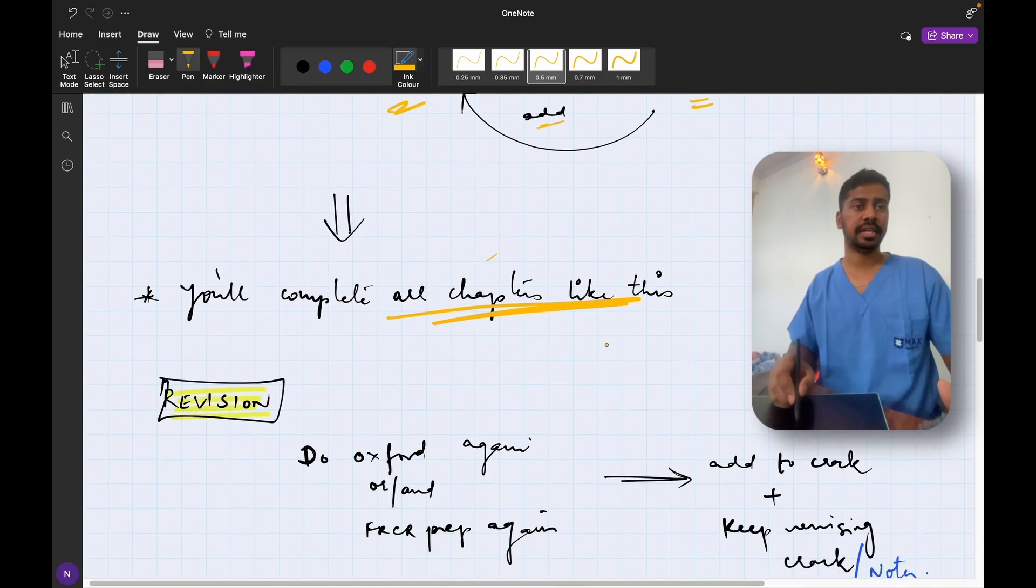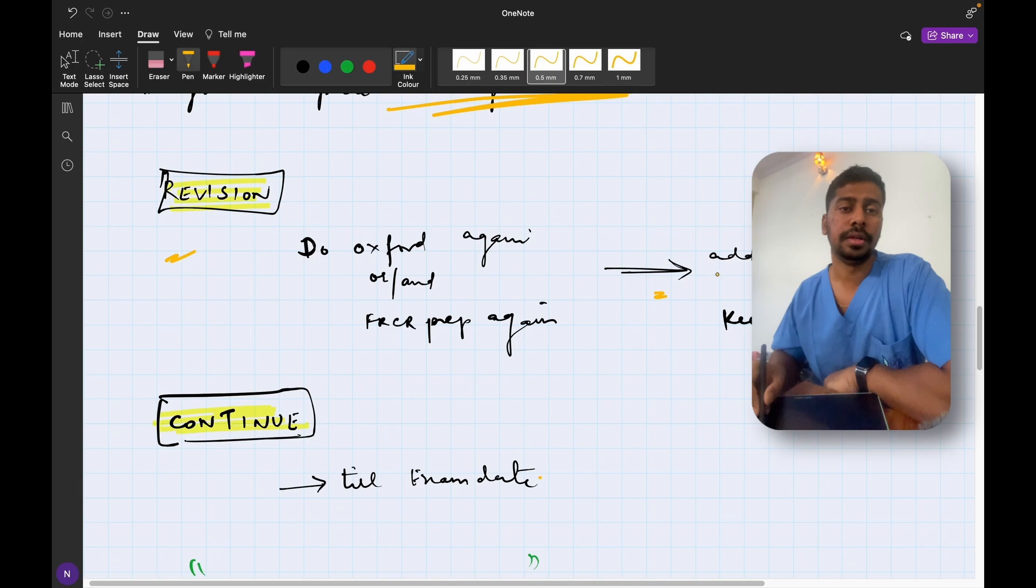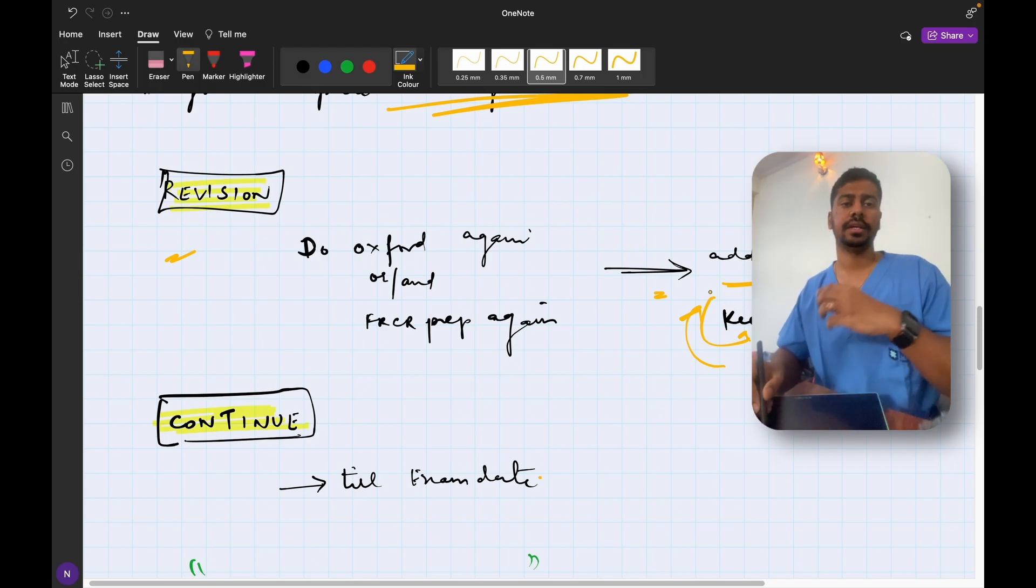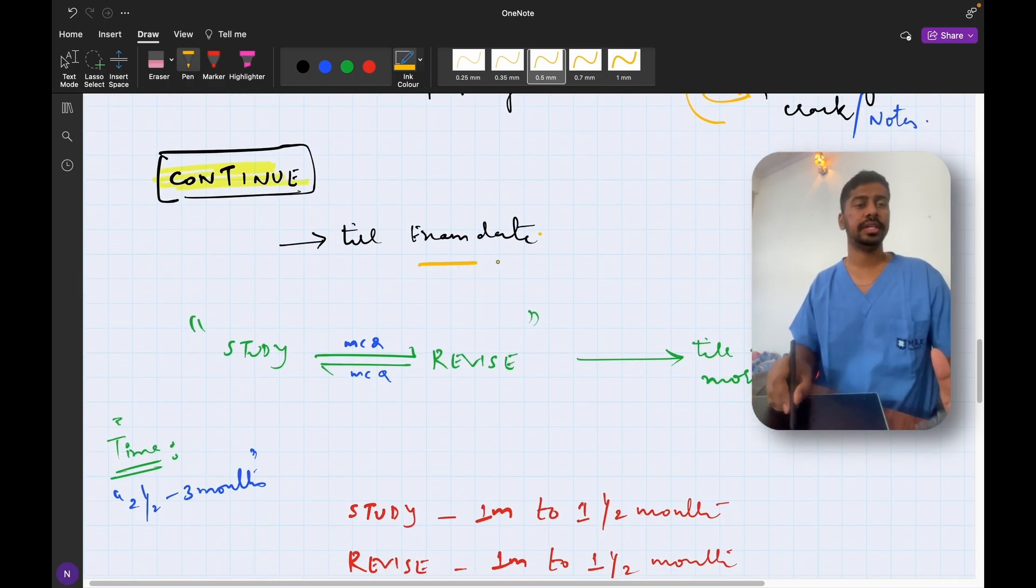So once you are done with the studying phase, now you will do the entire Oxford and the FRCR exam prep again, and in this time also you will find lot of new concepts and lot of things that you are getting wrong and you add these to your notes again and you keep revising your Crack the Core again. So you keep doing the same thing: keep solving MCQs, add the explanations to the questions that you went wrong into your textbook or into your notebook and you keep revising the notebook that you made.